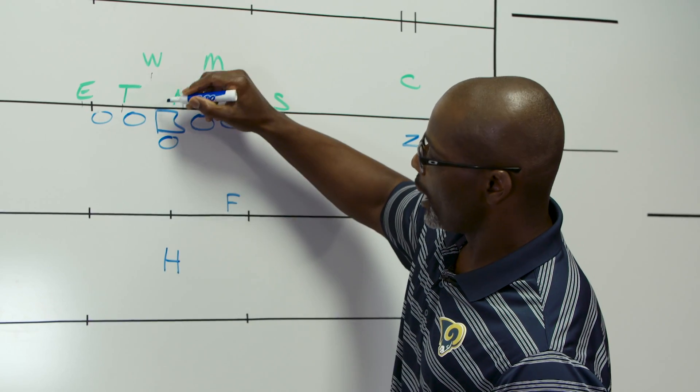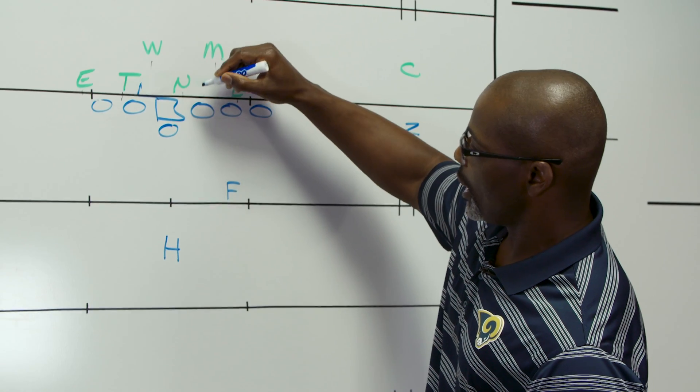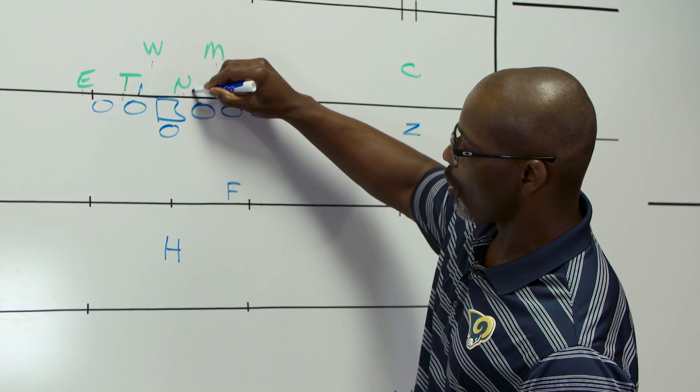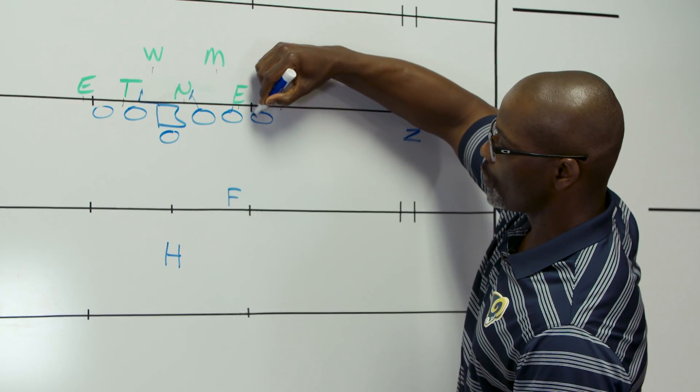Starting from the center, we'll take the center. He'll block back on the three technique. We'll take the front side of the play side guard. He's going to block down on the nose.